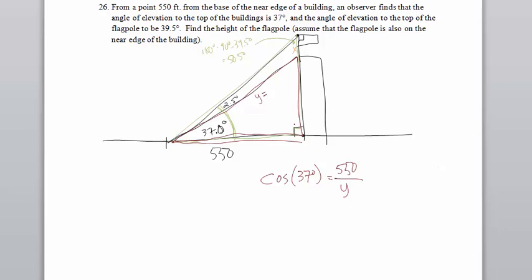Once I have that, then maybe I can go on to figuring out that skinnier oblique triangle. So to solve this, I multiply both sides by y, and then divide both sides by cosine 37, and I'd have y equals 550 over the cosine of 37 degrees.